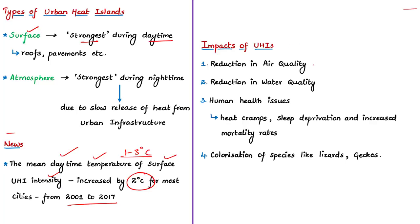Urban industries and automobiles emit hazardous pollutants and particulate matter into the air, which can affect human health. Urban heat islands also impact nearby water bodies — warm water from cities is transferred through drains and sewers into nearby lakes and ponds, polluting them. Additionally, cities tend to experience heat waves affecting human and animal health, leading to heat cramps, sleep deprivation, increased mortality rates, and colonization by species such as lizards, geckos, and ants that thrive in warm temperatures.